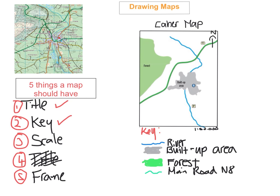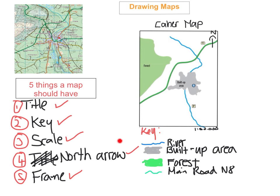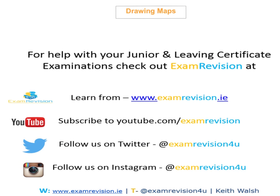Apologies — I wrote the title down twice by mistake. The fourth element should be the north arrow, not the title again. As you can see, the north arrow is up here on the map. The fifth element is the frame, which is just the border around the whole diagram. So the five things you need are: a title, the key, the scale, the north arrow, and the frame.